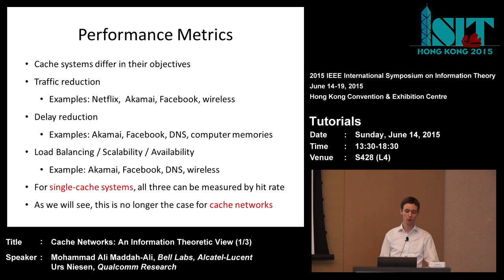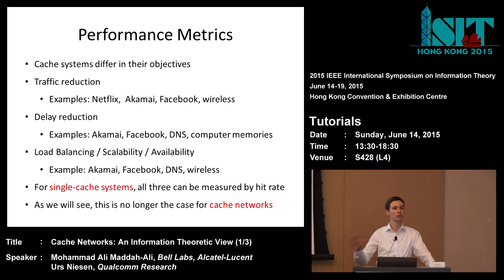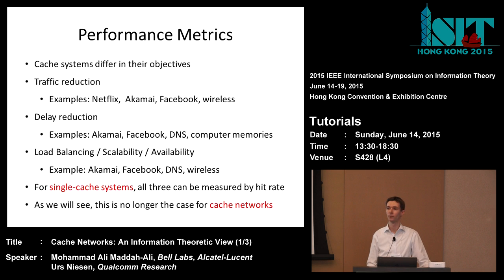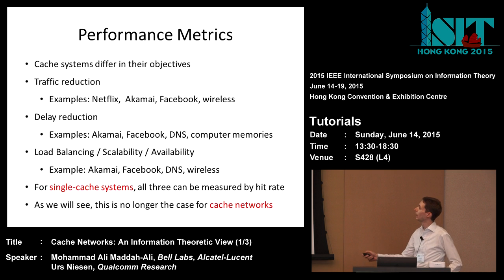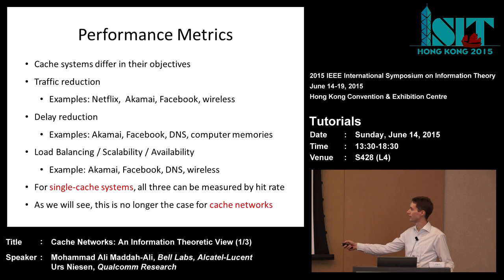The third metric is load balancing, also called scalability or availability. You want to ensure that if a single server fails, the whole system doesn't go down, or that a single server doesn't become overwhelmed when many users are active simultaneously. This was seen in the Akamai, Facebook, and DNS examples — in DNS, the root server would be swamped without caching — and also in the wireless example.